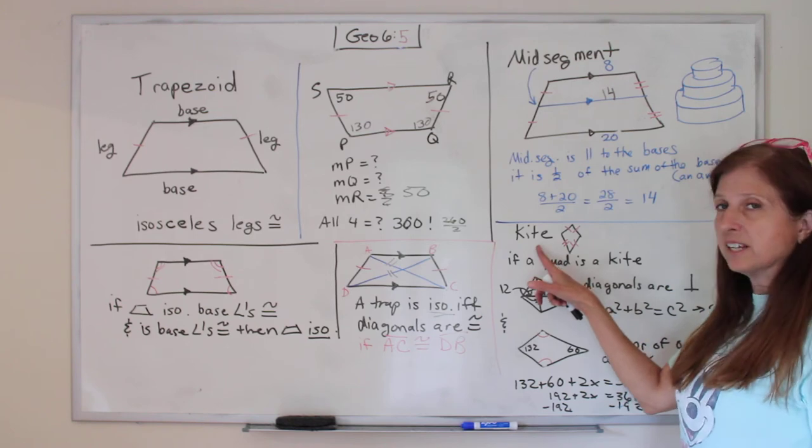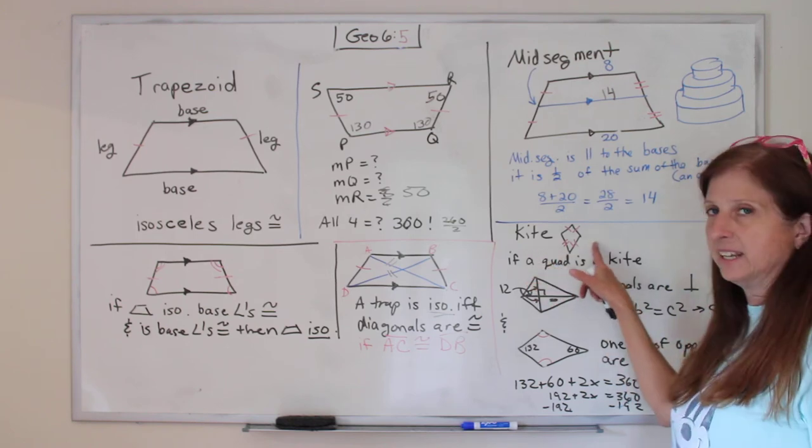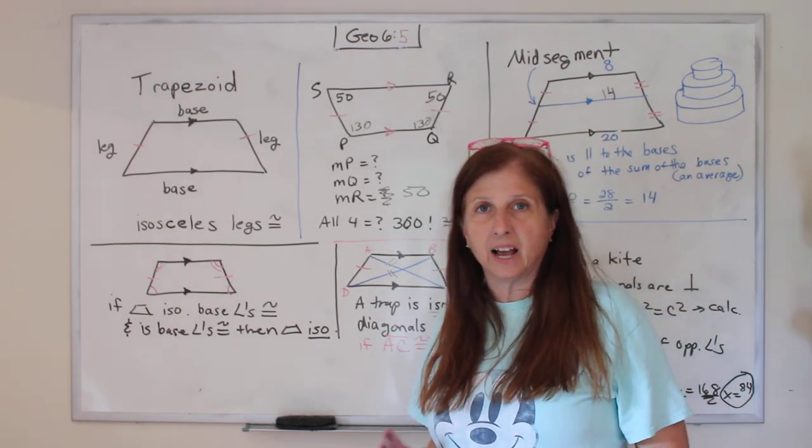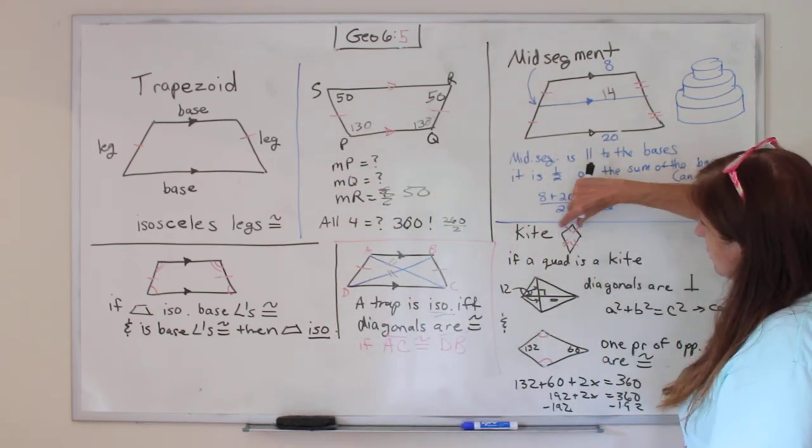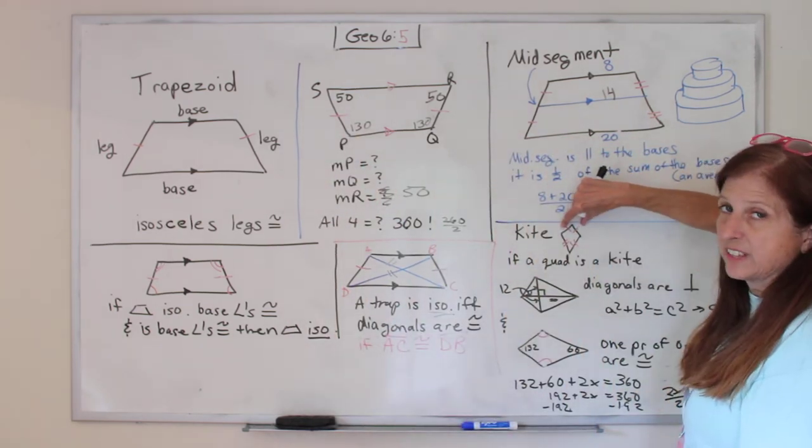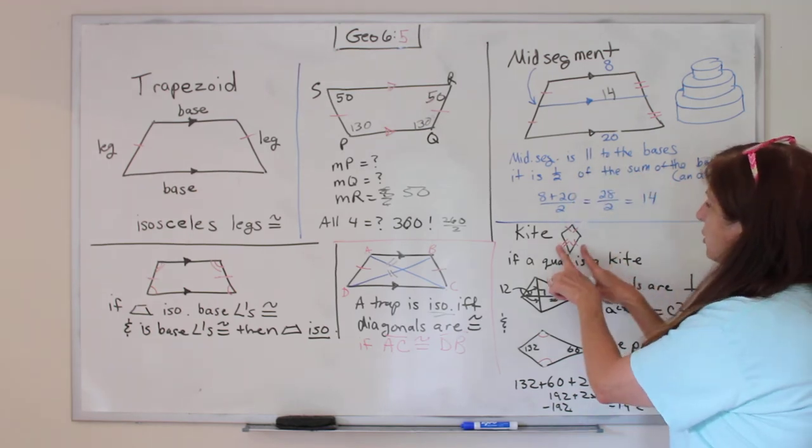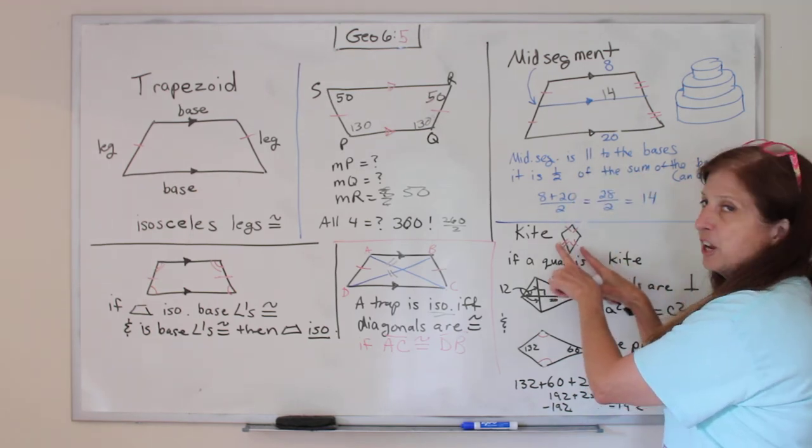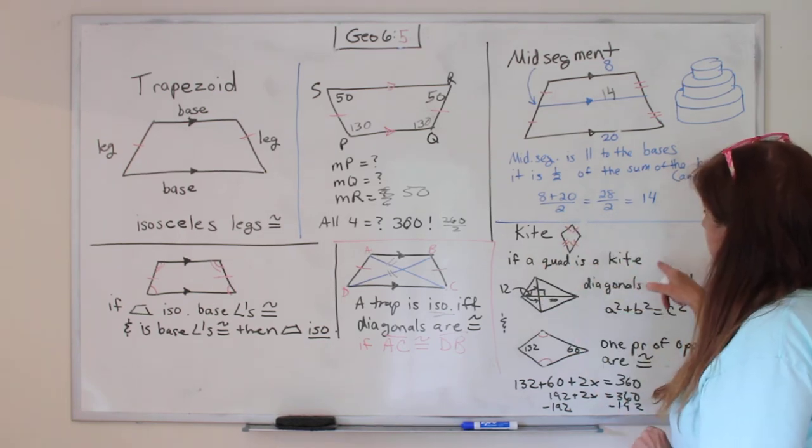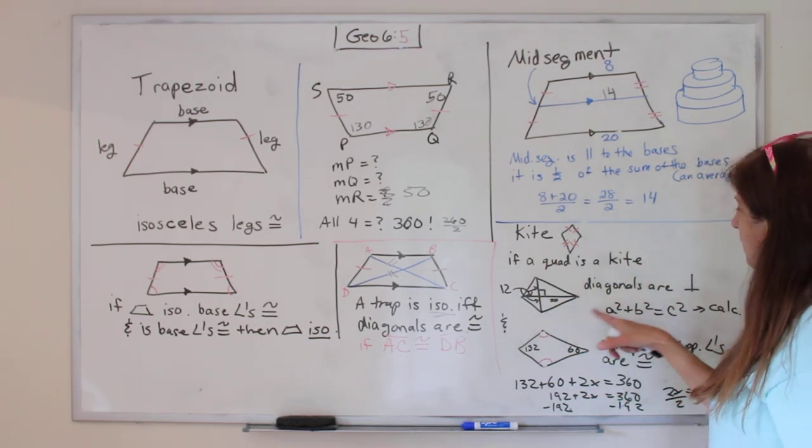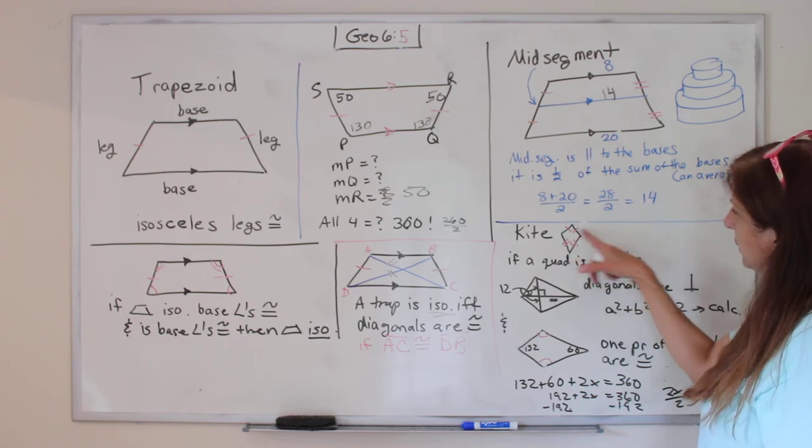All right. There's another shape called kite. And it is the shape of a kite, the kite that flies in the sky. It's got two sides that are the same that are short and two sides that are the same that are long. So it's that shape. It's a quadrilateral is a kite, and we will know it is a kite.